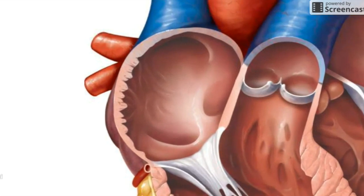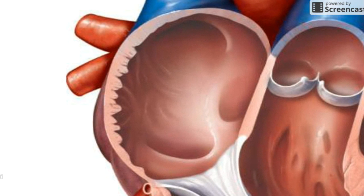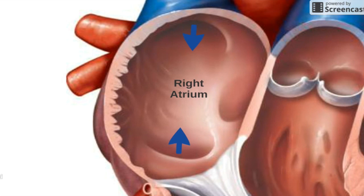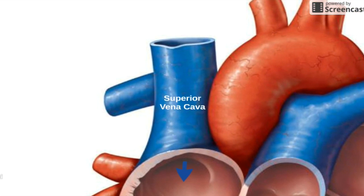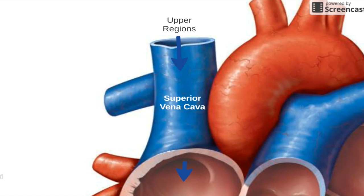Blood from our body enters the heart in a section called the right atrium. It enters from two locations. The first we will look at is a vein called the superior vena cava. Superior means above, so this vein comes into the heart from above. It carries deoxygenated blood from the upper regions of our bodies, like our heads and our arms.